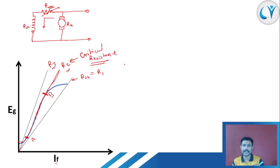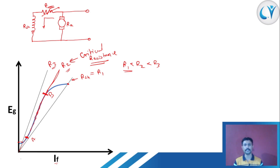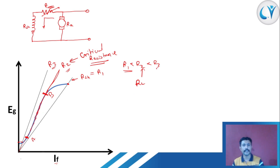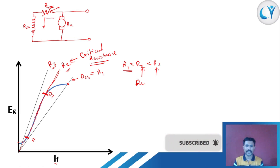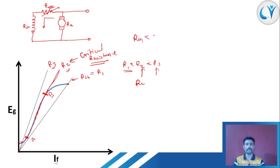We can write R1 < R2 < R3. At R1 condition we get the proper rated induced EMF. R2 is the critical resistance and gives an unstable point of operation. At R3 we get very low terminal voltage. So from this graph it is clear that the resistance of the shunt field winding should always be less than the critical resistance of that generator, and this is important information we can get from the open circuit characteristics.